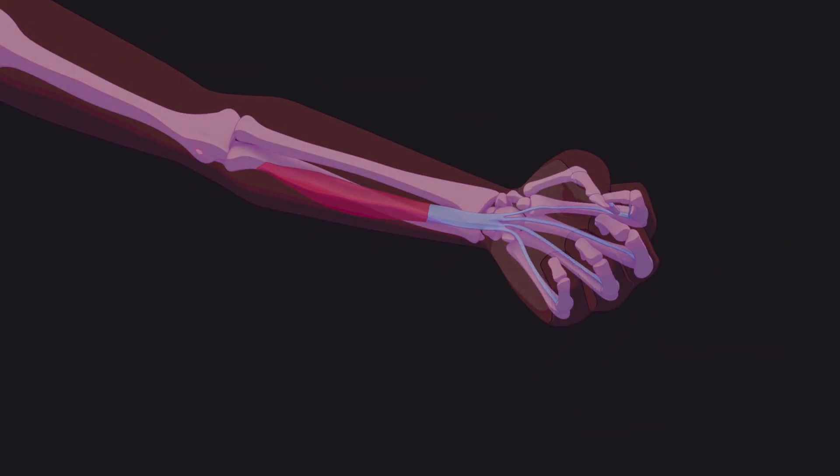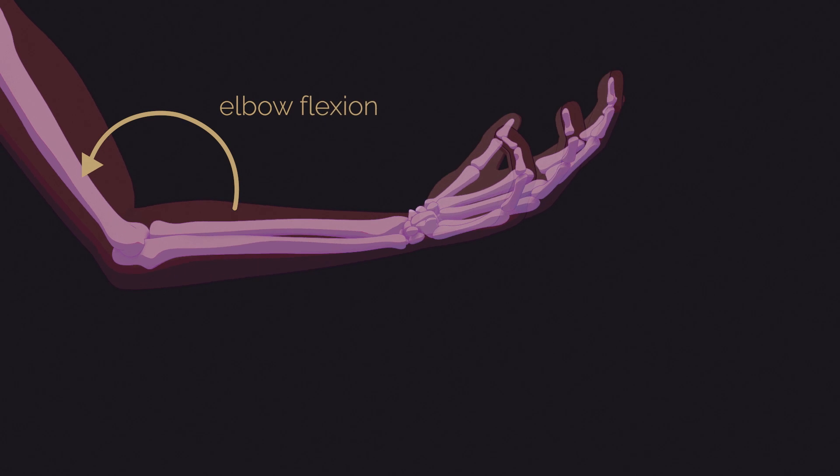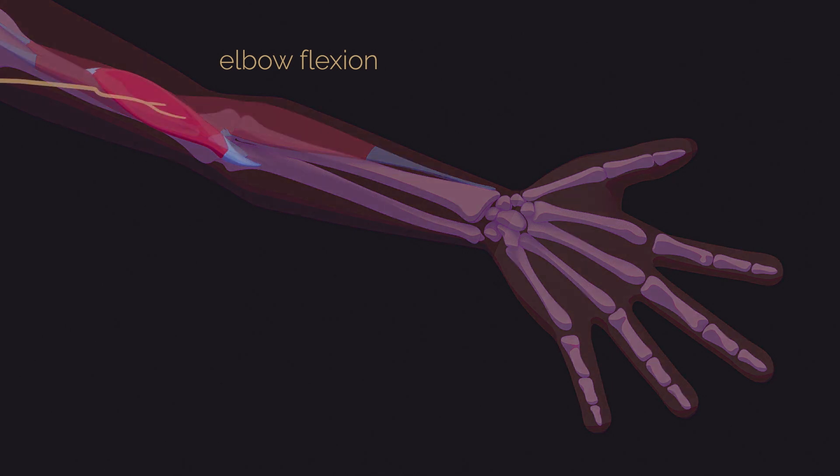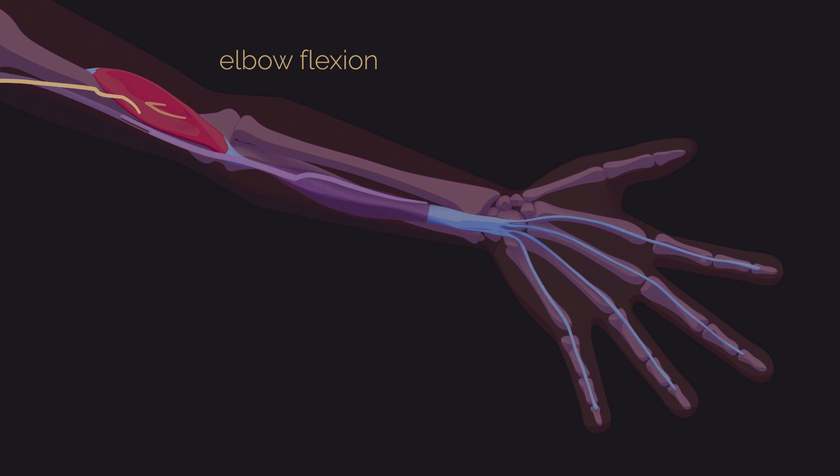Say you want to improve pinch and grasp. To do this, the surgeon looks at your elbow flexion, which is powered by three different muscles. If you have strong elbow flexion, the surgeon can use the nerve to one of these muscles and redirect it to the non-functioning muscle used for pinching and grasping.